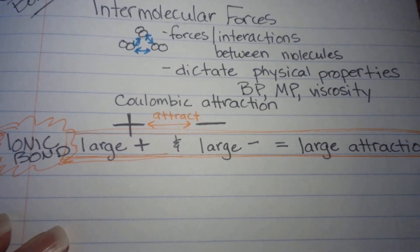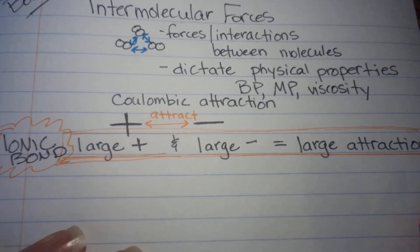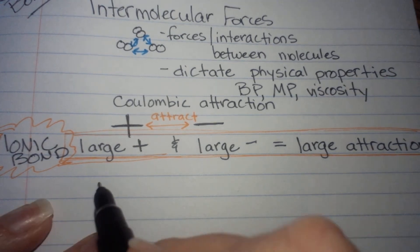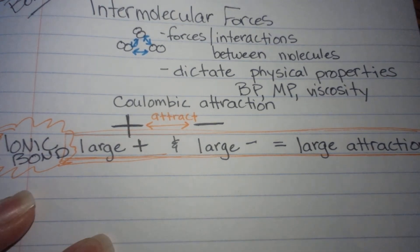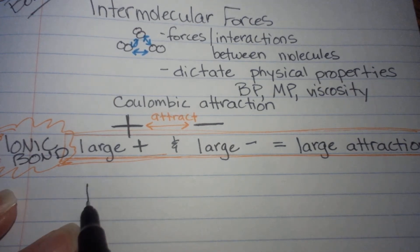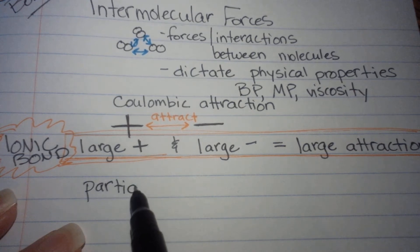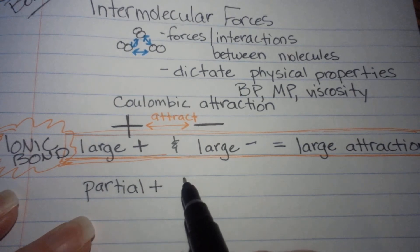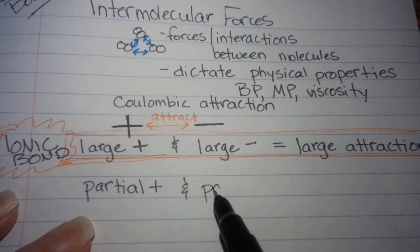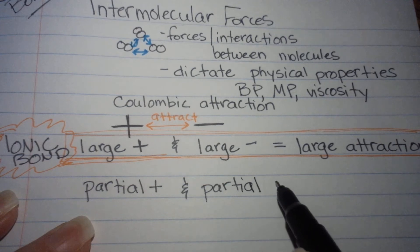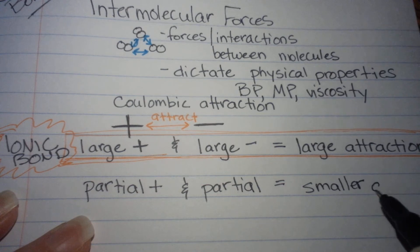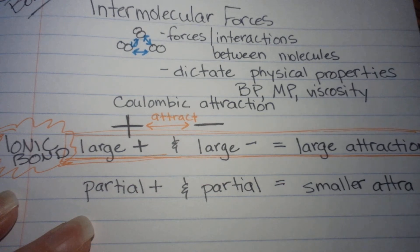But we're talking about covalent bonds in this unit. In a covalent bond, we're going to have partial positives and partial negatives, and we call that polarity. So in the covalent bond, we have a partial positive and a partial negative, and that's going to equal a smaller attraction. It's kind of like a flirt.